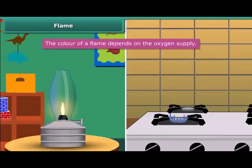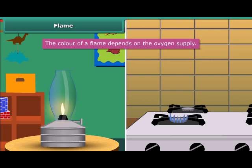When we look at a flame of a kerosene lamp, it is yellow in color, but the flame of a kitchen stove is blue. It is interesting to know that the color of a flame depends on the oxygen supply. If the oxygen supply is less, the flame will appear yellow due to incomplete combustion of fuel. And if it is more, the flame will appear blue due to complete combustion of fuel.